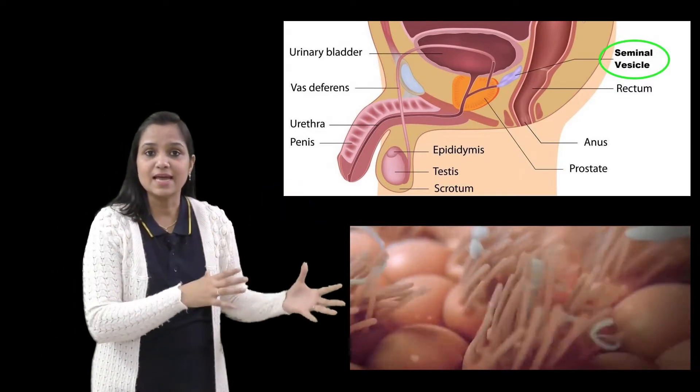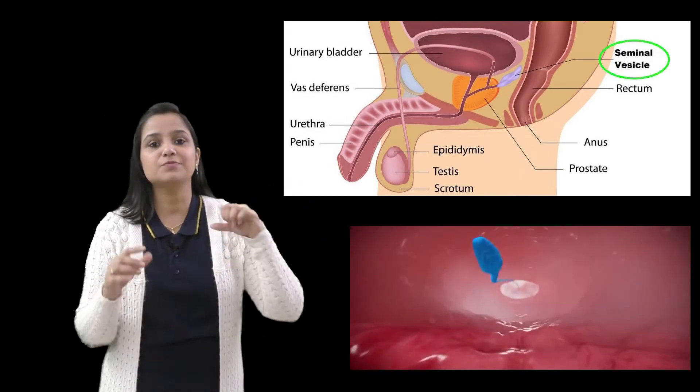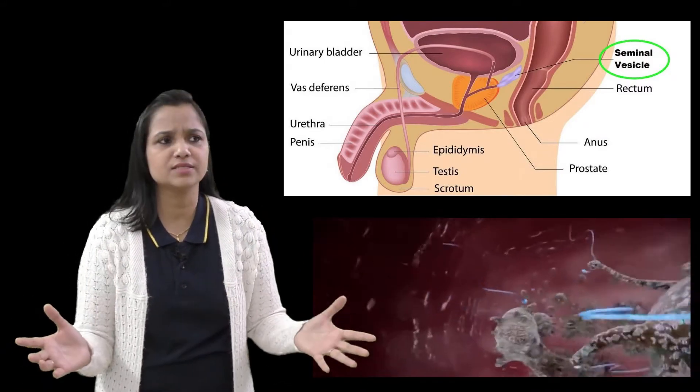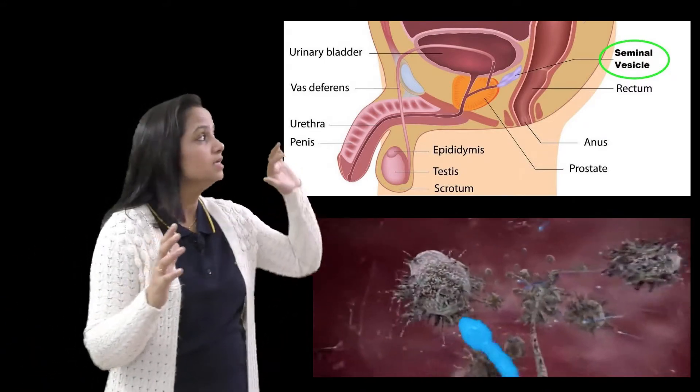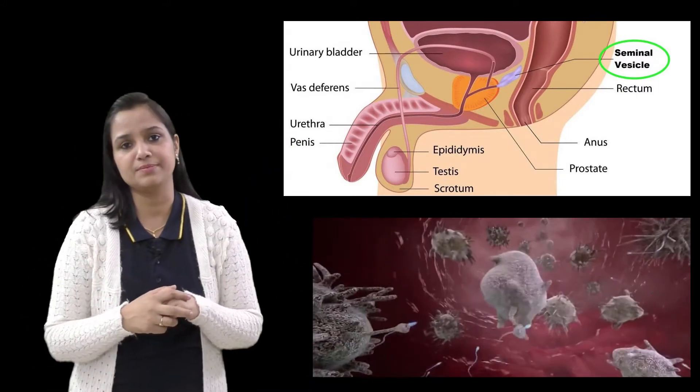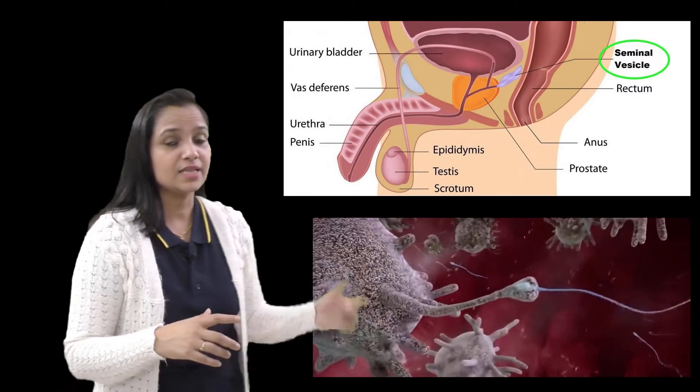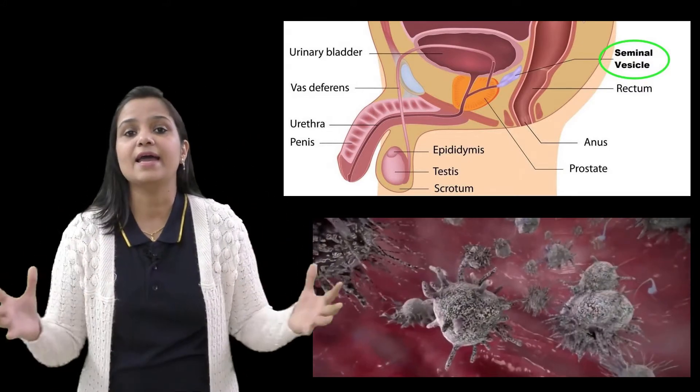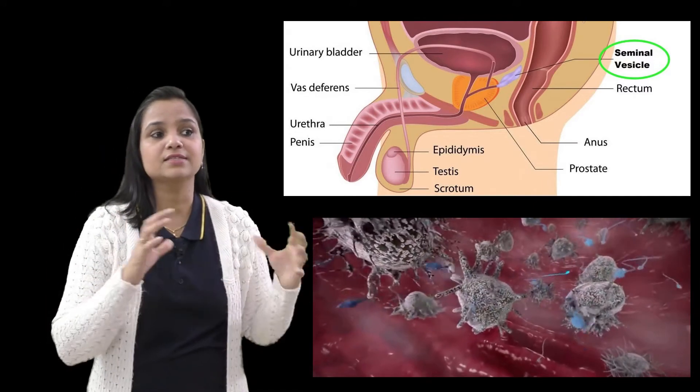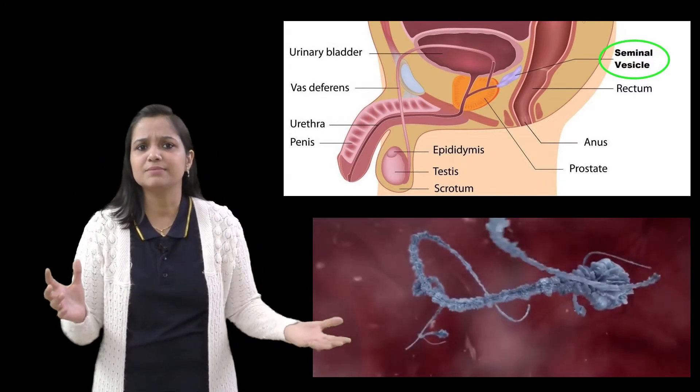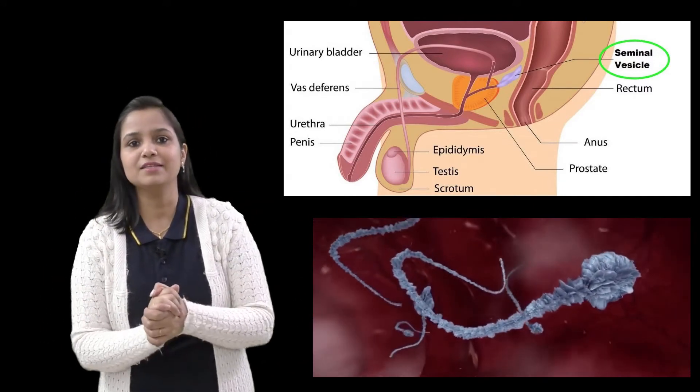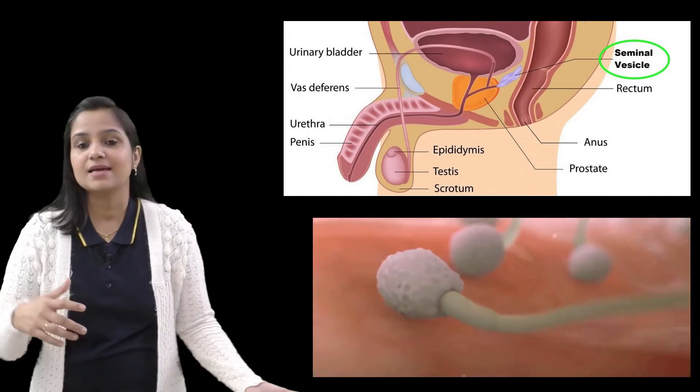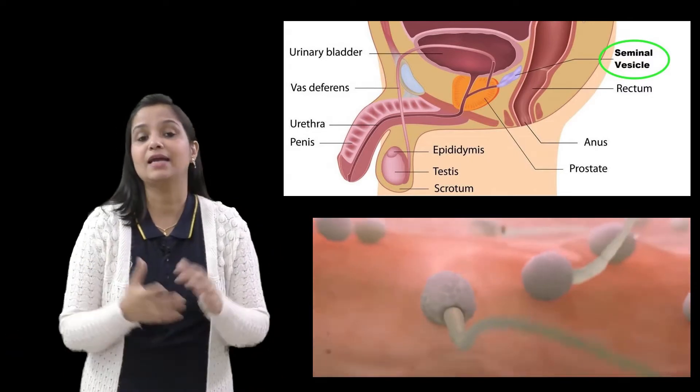So when we talk about the seminal vesicle, seminal vesicles produce a yellowish viscous fluid which is rich in fructose and other substances that make up about 70% of human semen. Next one is the prostatic secretion, which is very important because it is influenced by dihydrotestosterone. It is a whitish or sometimes clear, transparent thin fluid containing proteolytic enzymes,